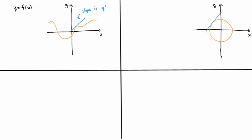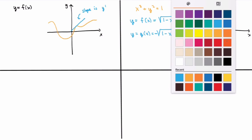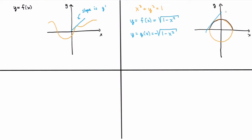One thing you can do is write down the equation of the circle, which gives a relation between x and y. More precisely, the equation will be x squared plus y squared equals 1 for the unit circle. To calculate the slopes of the tangent lines, you want to calculate y-prime. One way is to solve for y, but you end up with two solutions: the positive square root, giving the upper half of the circle, and the negative square root, giving the lower half.